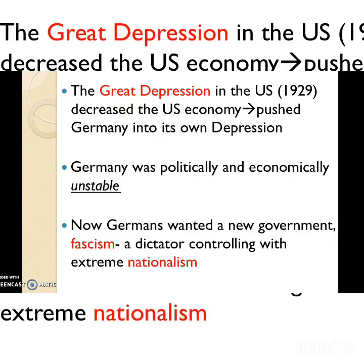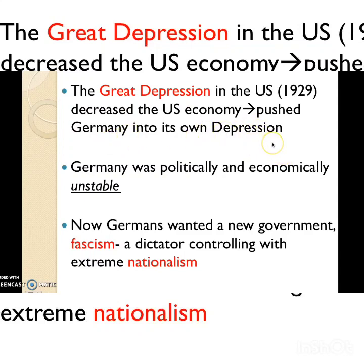Things were about to get even worse. Over in the US in 1929, the country went through the Great Depression — a really poor economic period caused by a stock market crash. Because the US was a leading economic power, many countries depended on its economy. When the US economy went down, economies across the world crashed as well, including Germany, which went from poor to even poorer, entering its own great depression.